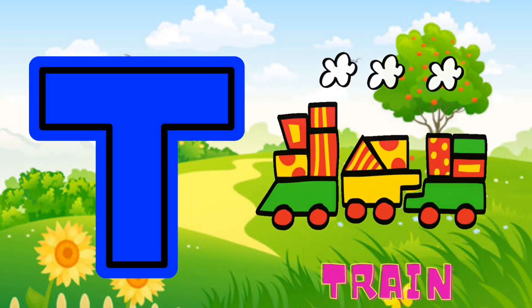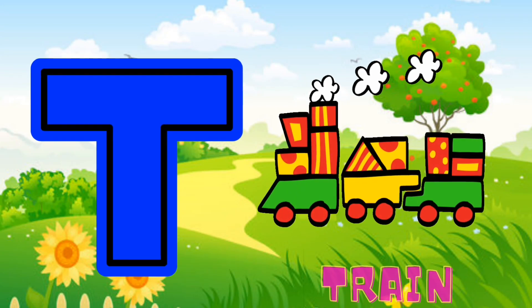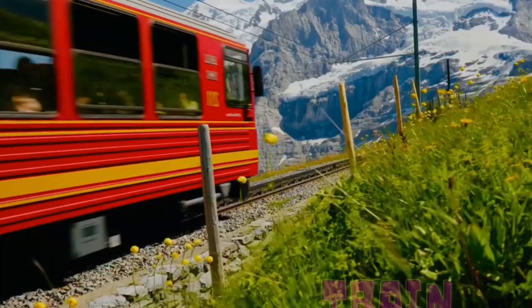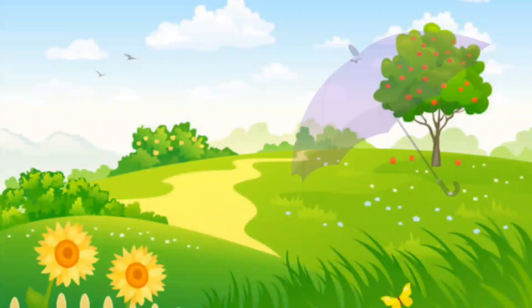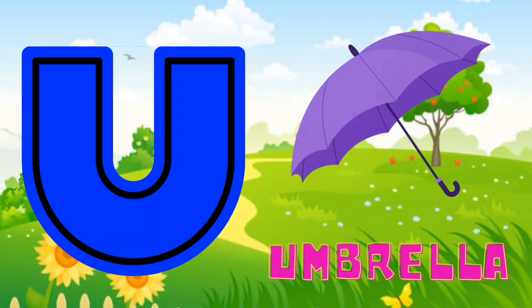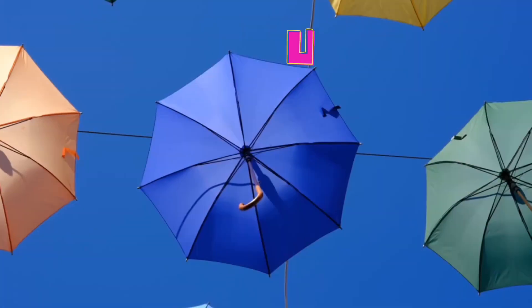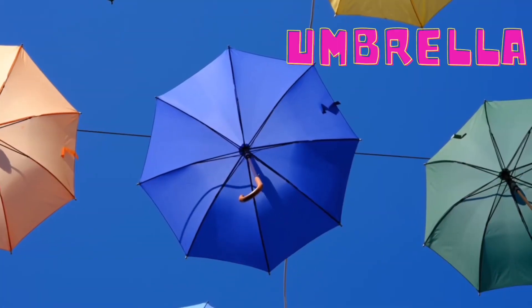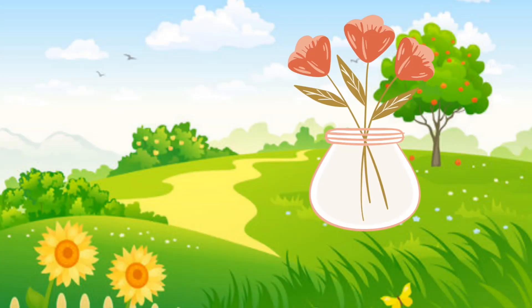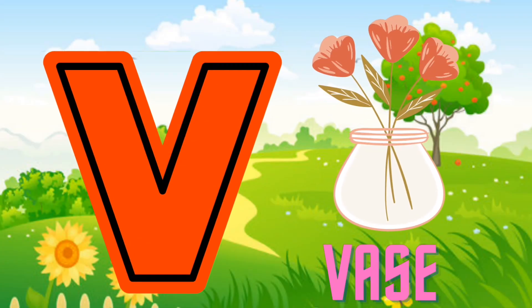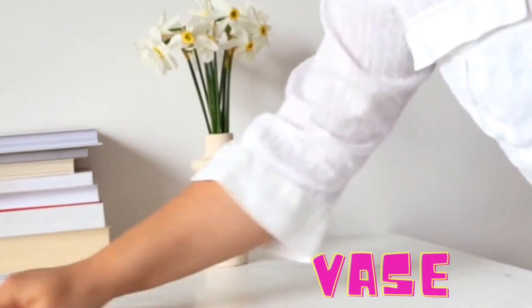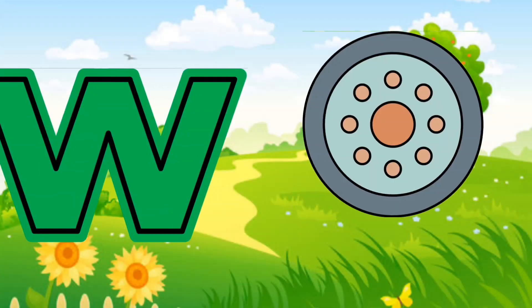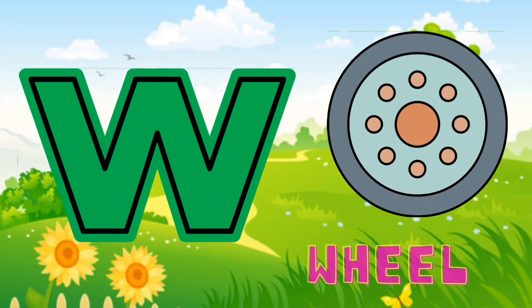T is for chain. Chain. U is for umbrella. A, a, umbrella. V is for face. W, w, w, face.